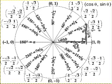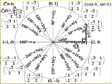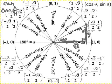What does SOH CAH TOA tell us? Cosine is adjacent over hypotenuse. In this triangle, the adjacent side to this 30 degree angle is square root of 3 over 2. We just figured that out. And the hypotenuse is 1, because it's a unit circle and that's the radius. So the cosine of this angle, using the SOH CAH TOA definition, is square root of 3 over 2 over 1, which is square root of 3 over 2 — the same thing as the x-coordinate.